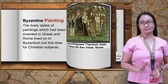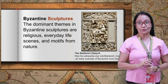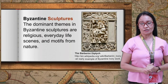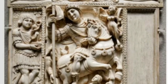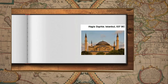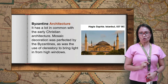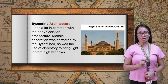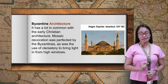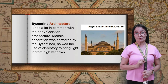The dominant themes in Byzantine sculpture are religious subjects, everyday life scenes, and motifs from nature. The Barberini Diptych is an early example of Byzantine ivory work. Byzantine architecture has much in common with early Christian architecture. Mosaic decoration was perfected by the Byzantines, as was the use of clerestory windows to bring light in from high windows.